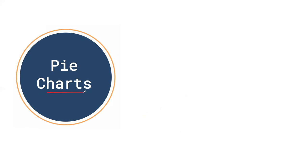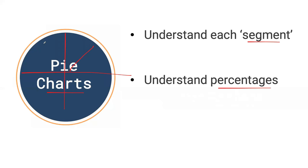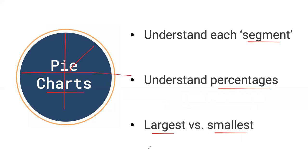So what is a pie chart? How is it different from a bar graph or a line graph? With pie charts, you'll really have to understand each segment. It looks like a pie and it is split up into various pieces. You'll have to look at the percentages — 50%, 13%, things like this — and understand the largest versus the smallest percentages in your chart. You should be practicing pie charts, line graphs, and bar charts so you are best prepared for the exam.